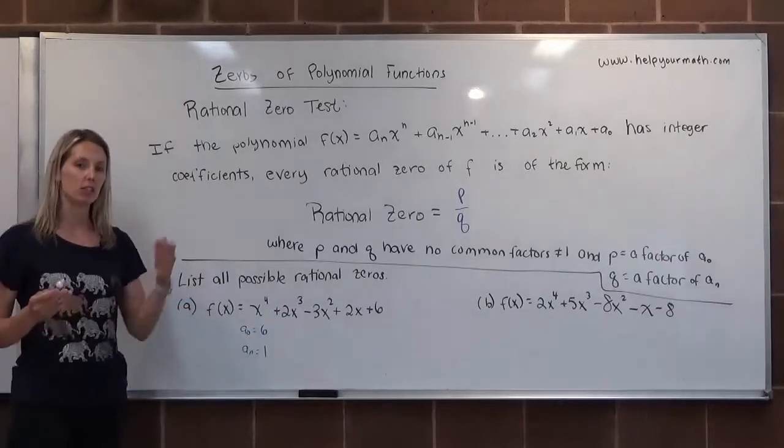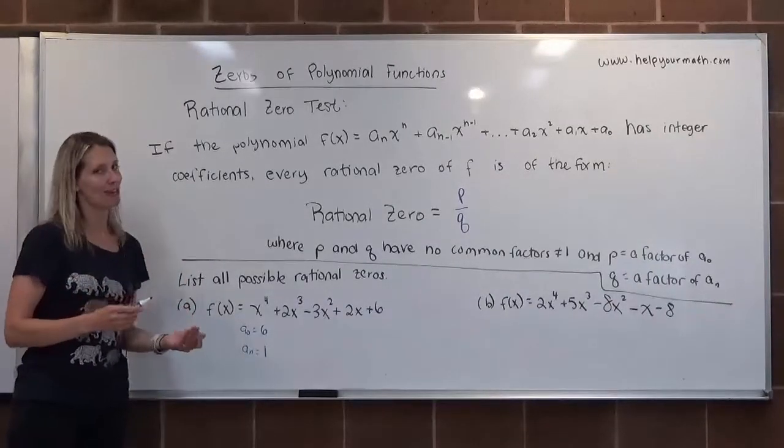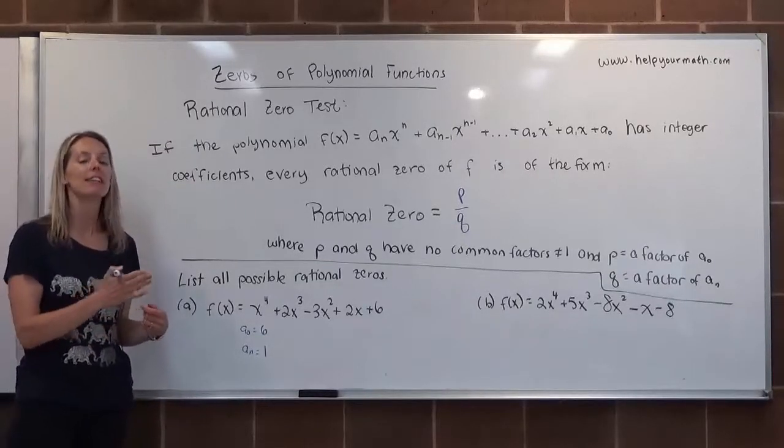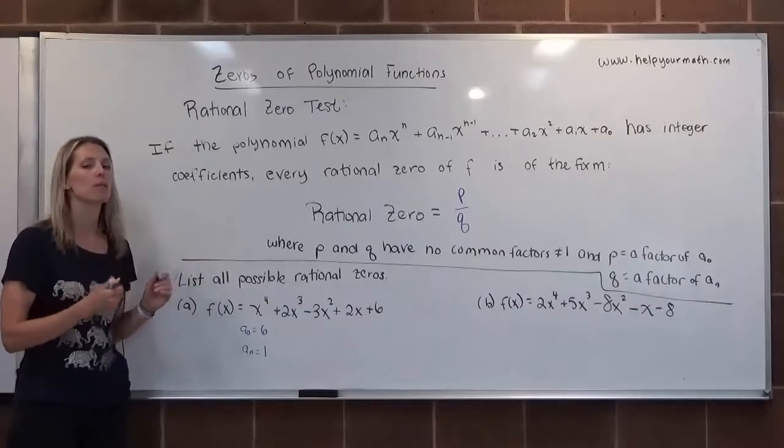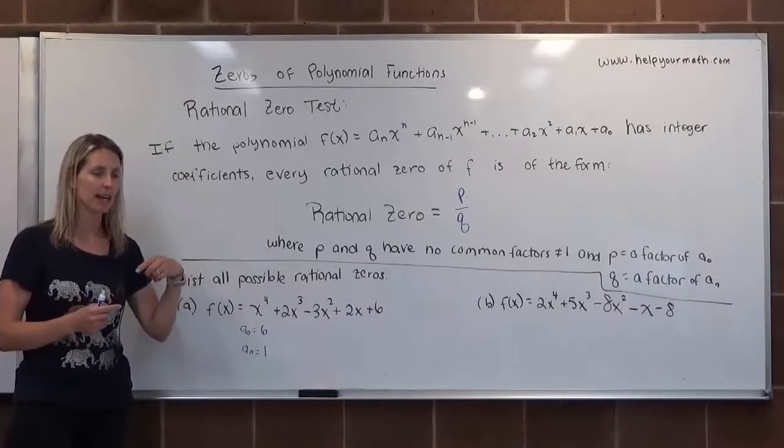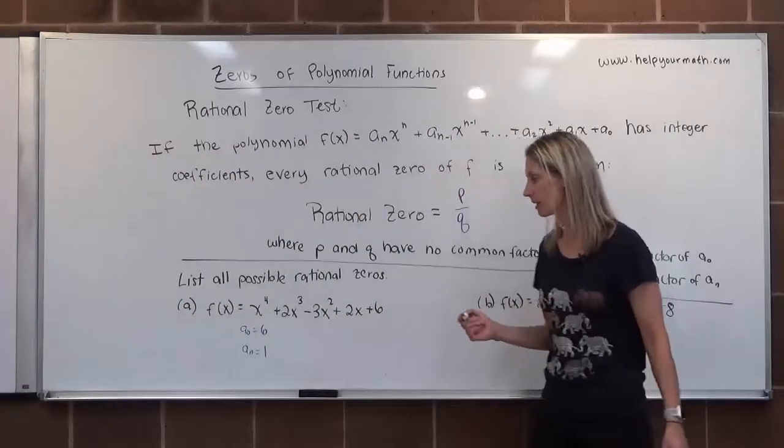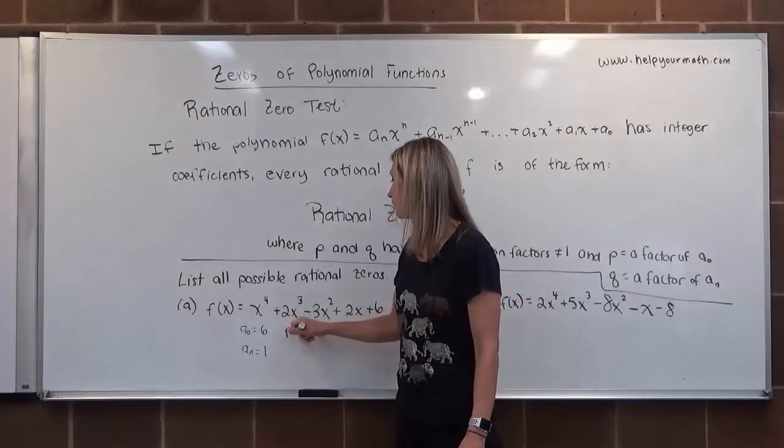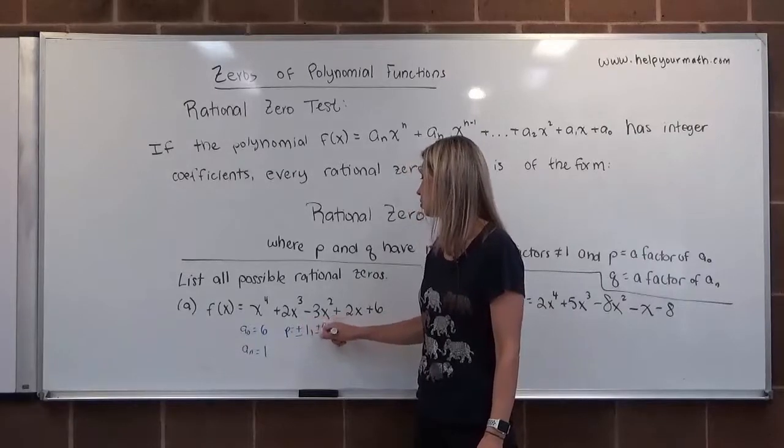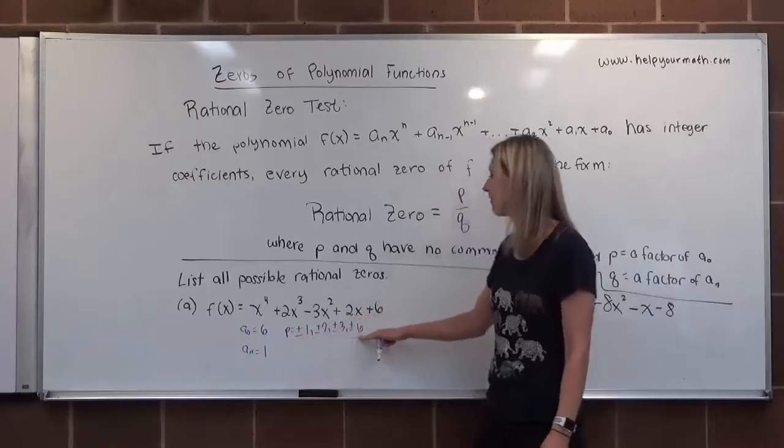What we want to do is we want to list all of the factors, and here's where it can get a little bit uncommon, is that not only do we list the positive factors, we also list the negative factors. There are a lot of different ways that you can write it. You can write them all out. You can use little positive negative signs. You can use one positive negative sign. You should talk to your professor about what his or her preference is. So the factors of 6 of my P values will be plus or minus 1, plus or minus 2, plus or minus 3, and plus or minus 6.